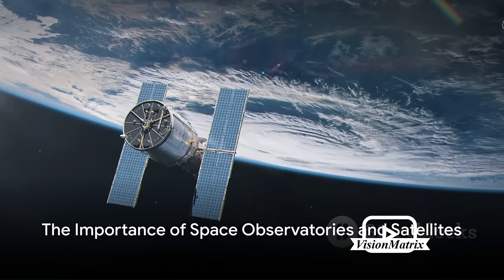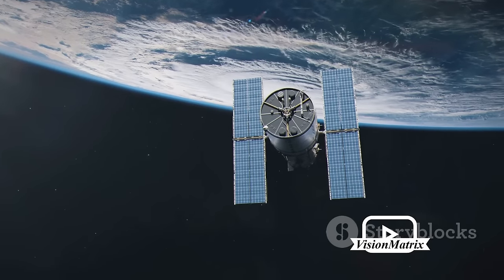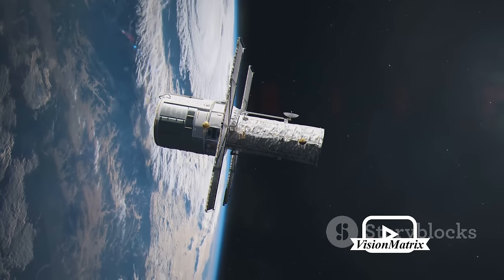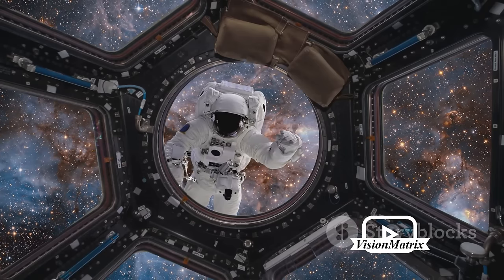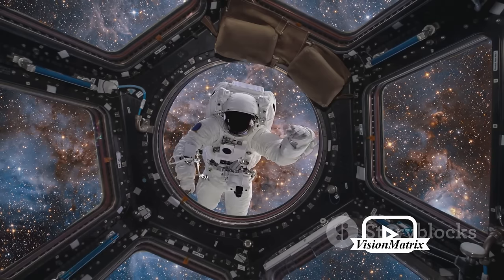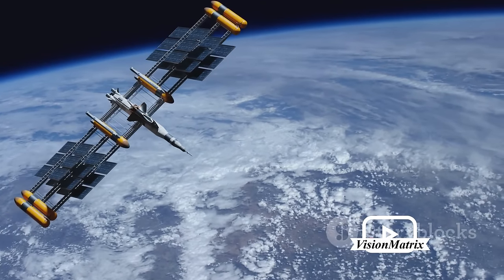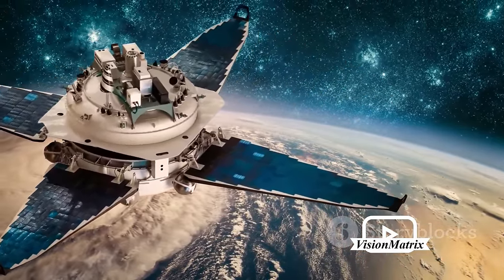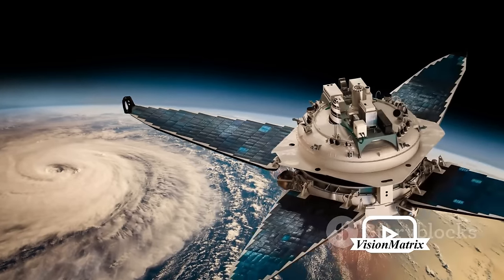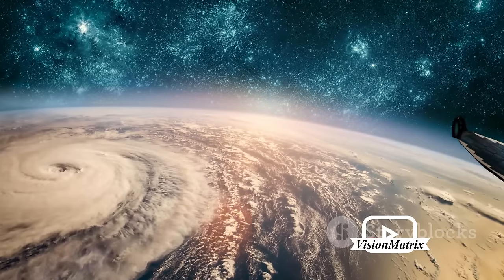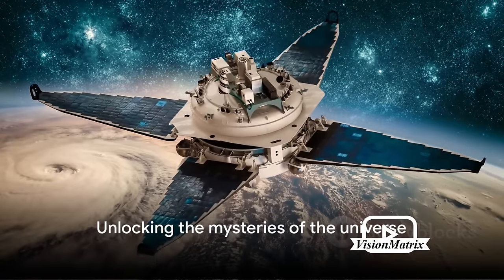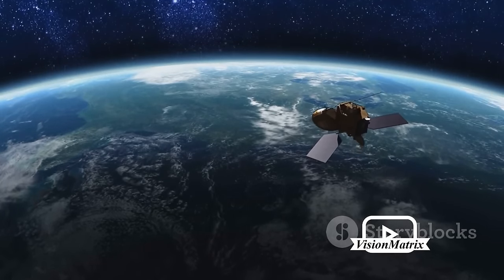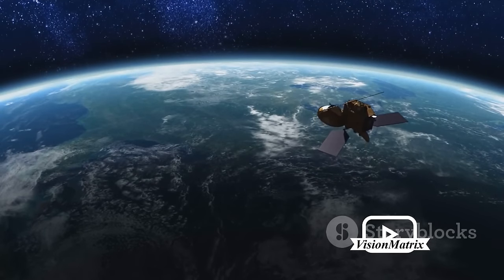Space observatories and satellites, our eyes in the cosmic ocean. These remarkable tools have propelled us to new frontiers, illuminating the mysteries of the universe and deepening our understanding of the cosmos. From the Hubble Space Telescope capturing breathtaking images of distant galaxies, to Kepler hunting for exoplanets, we've been able to peer into the vastness of space and time. Observatories like Chandra and Fermi have unveiled the high-energy universe, revealing black holes, neutron stars and gamma-ray bursts, phenomena that were once mere theories. Satellites, on the other hand, have given us unprecedented views of our own planet, tracking weather patterns, monitoring climate change, and aiding in navigation and communication. These instruments perched above the Earth's atmosphere, free from terrestrial limitations, have made key discoveries possible. They've shown us that we are but a tiny speck in a vast cosmic sea, yet integral to its fabric. Space observatories and satellites are gateways to the cosmos.